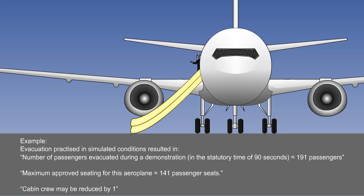the number of cabin crew may be reduced by one for every whole multiple of 50 seats by which the maximum approved passenger seating configuration falls below the certificated maximum capacity. To explain this, an example is on screen.